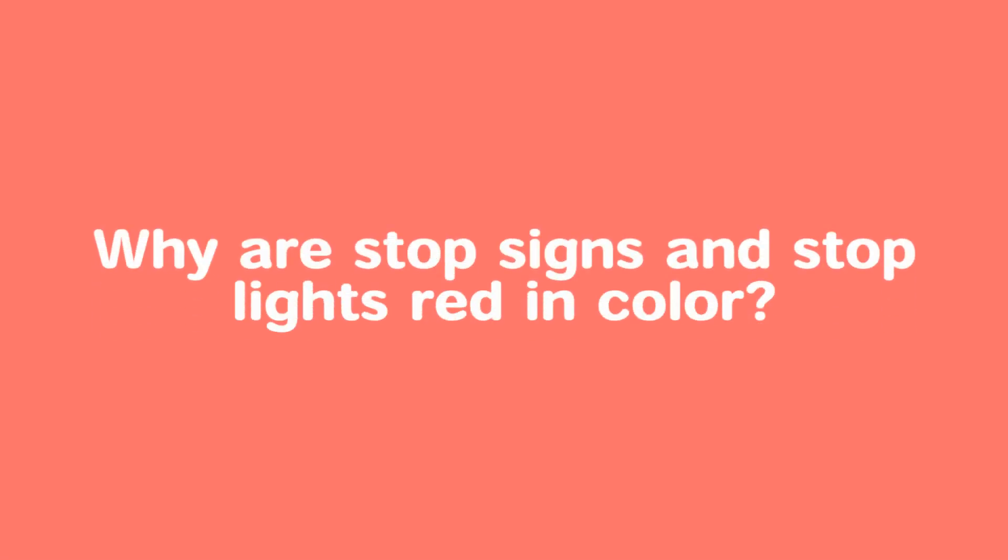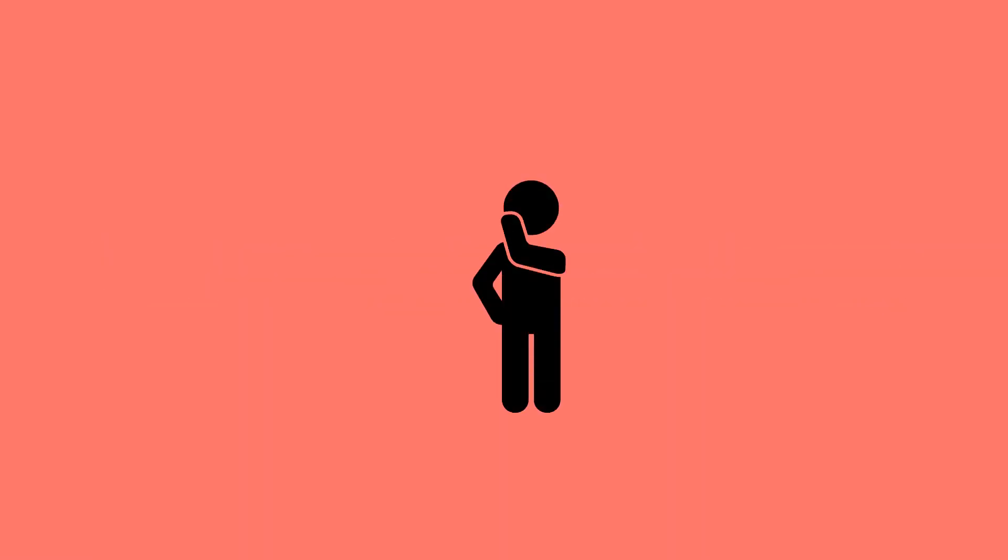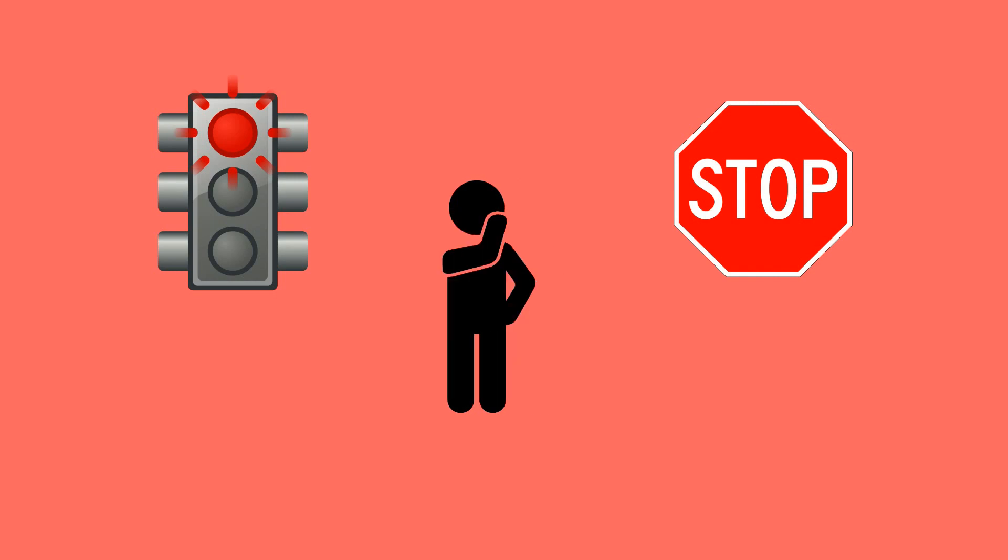Why are stop signs and stop lights red in color? When we look around, we see all stop and danger signs are marked in red color. So why red? To understand this, let's start from basics.